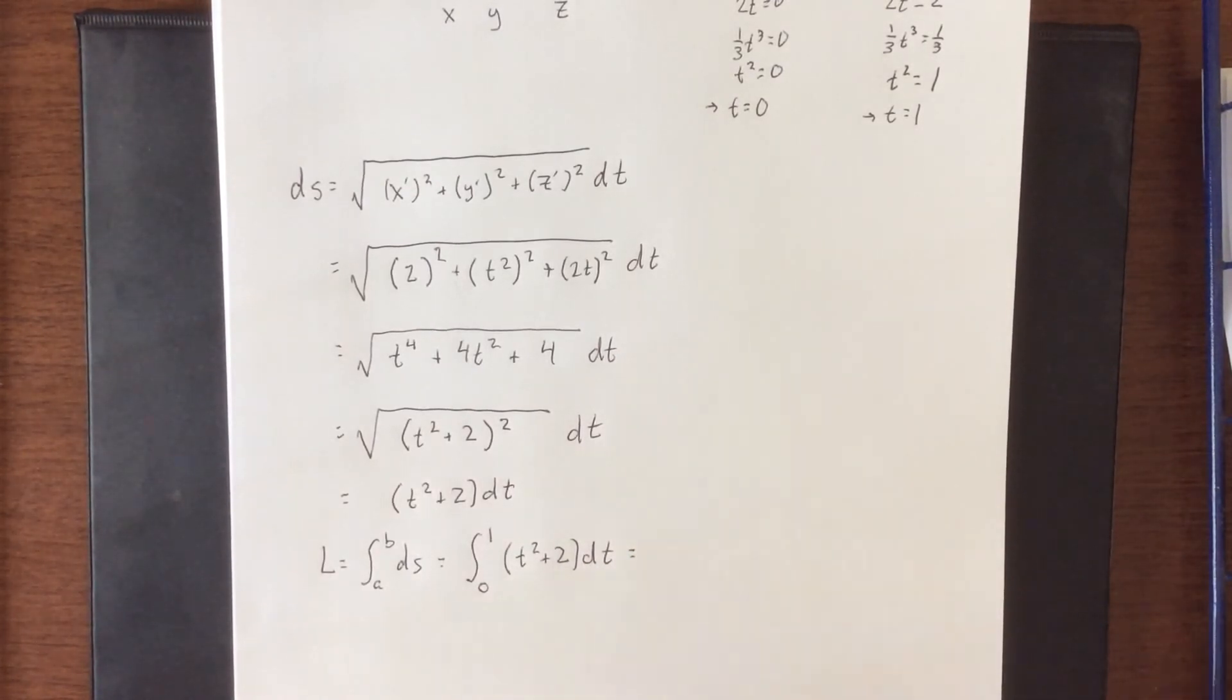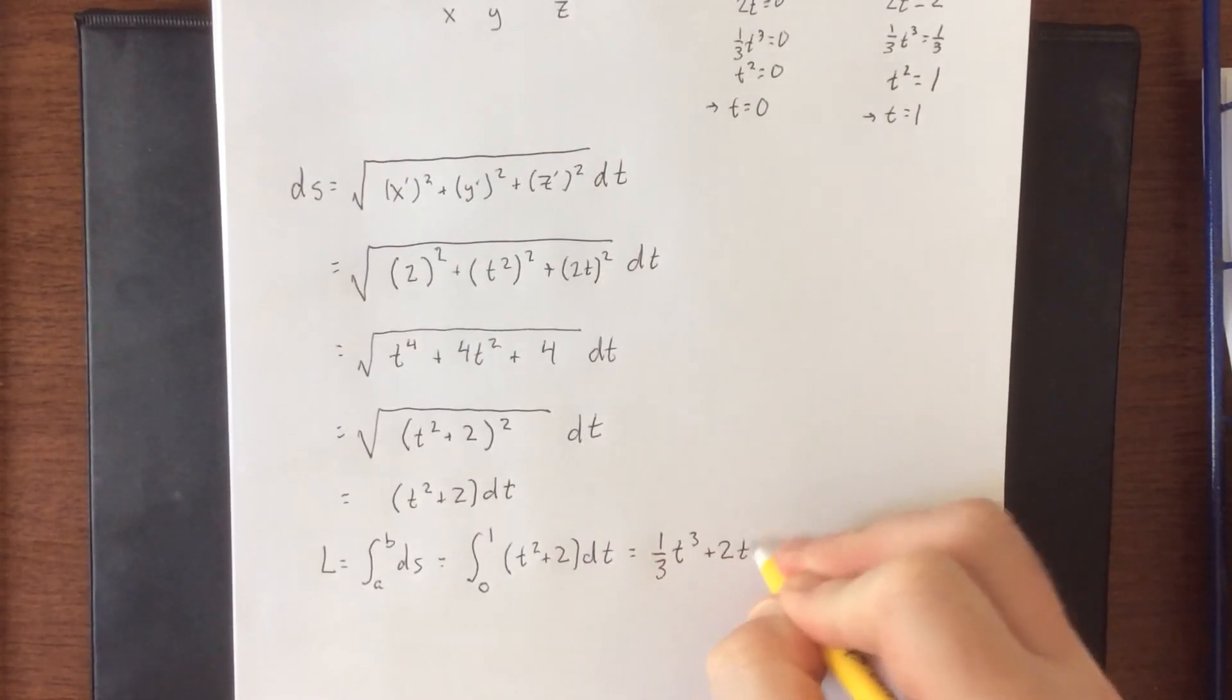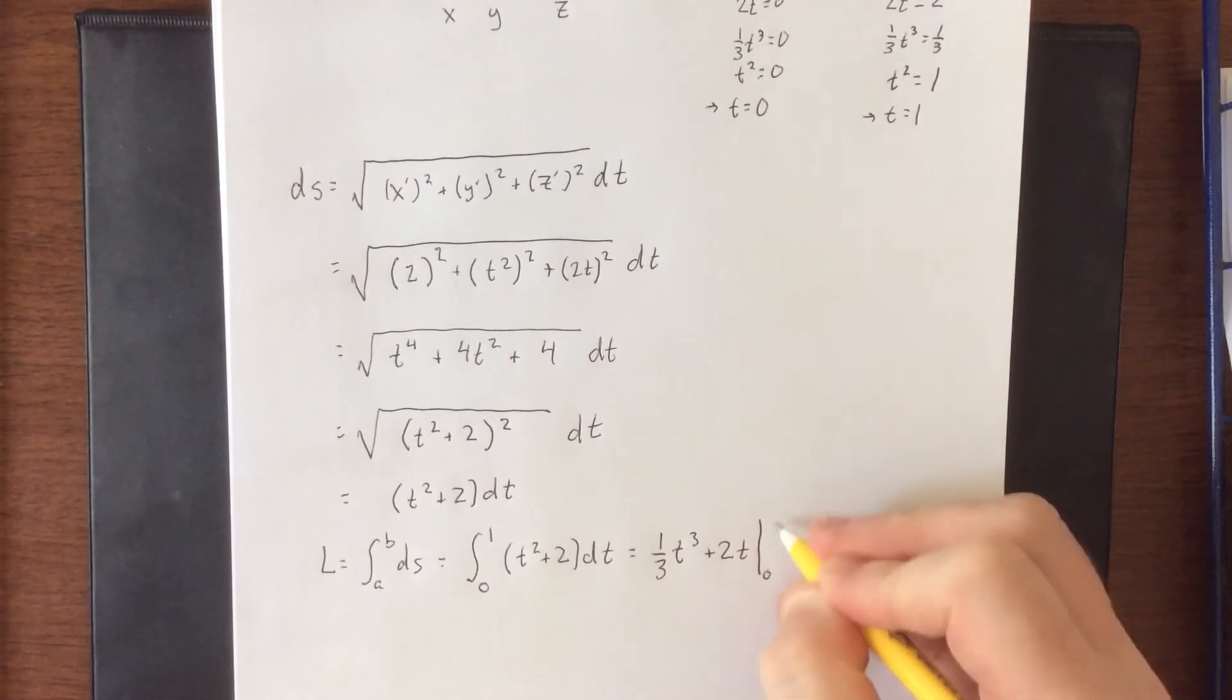Both of these integrate using the power rule. This will be one-third t cubed plus 2t going from lower bound 0 to upper bound 1.